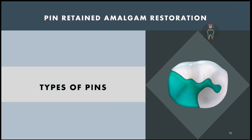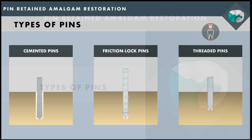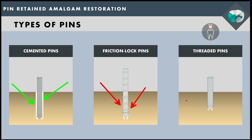There are only three types of pins available: cemented pins, friction lock pins, and threaded pins. For cemented pins, the pin channel is made to a bigger size and the pin is cemented into it. For friction lock pins and threaded pins, the pin channel is prepared smaller than the size of the pin. Friction lock pins are tapped forcefully inside the pin channel, threaded pins are threaded forcefully inside, whereas cemented pins are passively cemented.